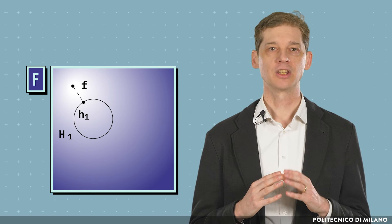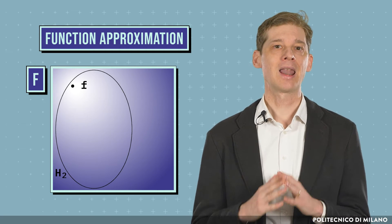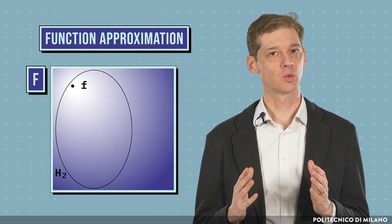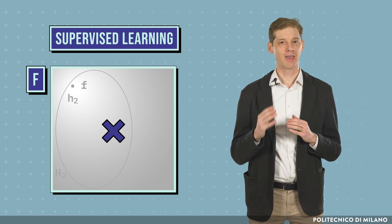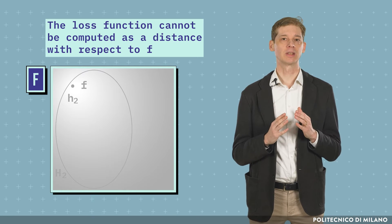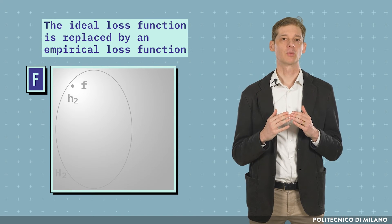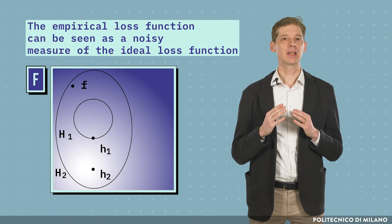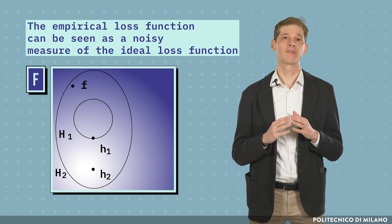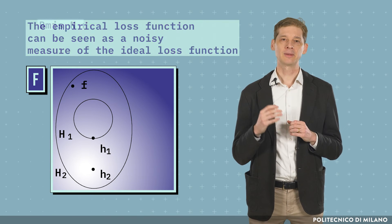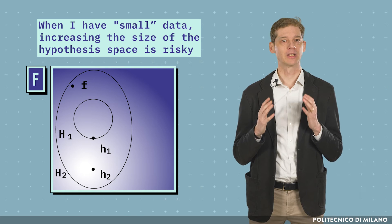What we have described so far is not supervised learning, but function approximation. If we want to improve our solution in function approximation, we can enlarge the hypothesis space, thus having more chances to include the desired function f. The same does not hold for supervised learning. Since function f is unknown, the loss function cannot be computed as a distance with respect to f. Hence, the ideal loss function is replaced by an empirical loss function, which is computed over the training dataset. The empirical loss function can be seen as a noisy measure of the ideal loss function. The noise is greater the fewer examples are available in the training dataset. This implies that when we have small data, increasing the size of the hypothesis space is risky, as the optimization algorithm is negatively affected by the noise on the loss function.